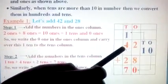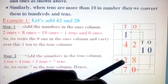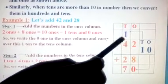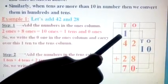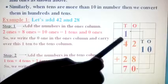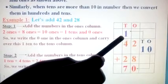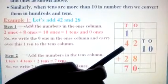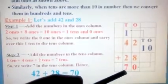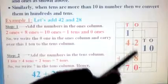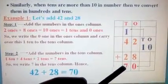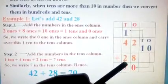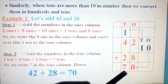So 1 plus 4 plus 2. 4 plus 1 is 5. Any number added with 1, you get the next number. Isn't it? So 4 plus 1 is 5, and 5 plus 2, that is 7. So you are adding the ones column separately and tens column separately. So the answer for 42 plus 28 is 70.